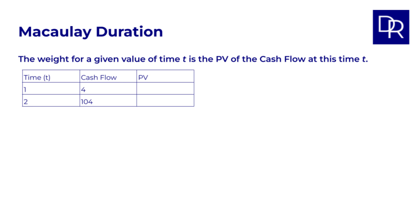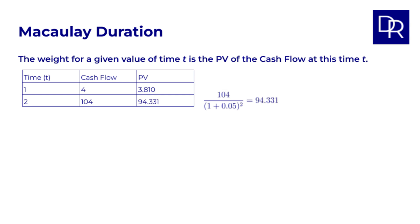So we calculate the PVs. For the cash flow after 1 year, this is the coupon payment of 4, divided by 1 plus the yield as a decimal, so 0.05, to the power of 1, which is 3.810. And after 2 years, 104 divided by 1.05 to the power of 2, which is 94.331. We also need to know the sum of the weights, which is the sum of the PVs of the cash flows, which is 98.141.